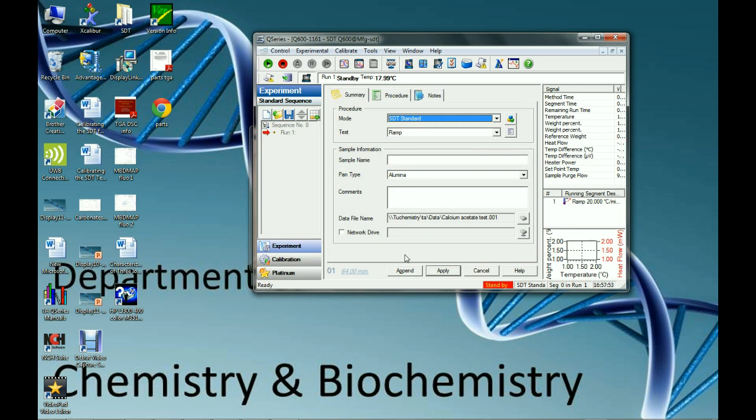So we need to make sure that our flow rate for our nitrogen is at 100 milliliters per minute. So once we have all of that set up, we can apply and start the run.